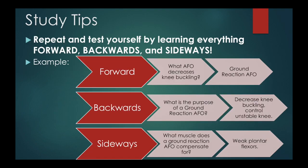Learning something forward would be: what kind of AFO decreases knee buckling? If you're asked that and you're able to say it's a ground reaction AFO, then you've learned it forward — you're able to hear the question and provide the answer. Learning it backwards would be if the question was asked the other way: what is the purpose of a ground reaction AFO? And now you know it's to decrease knee buckling, to control an unstable knee joint.